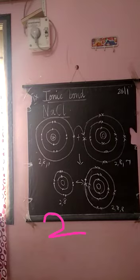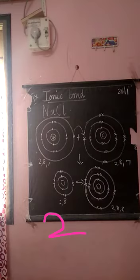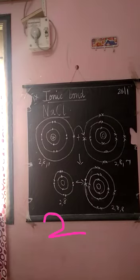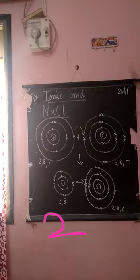So, sodium plus, chlorine minus — that is sodium chloride. If it loses 2 electrons, you write Na 2+. In the case of calcium, it is Ca 2+. That way, we can get the formula sodium chloride. This is one example.